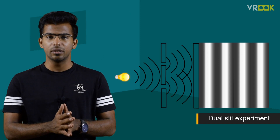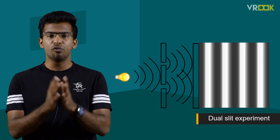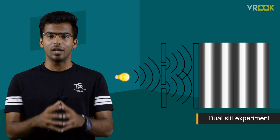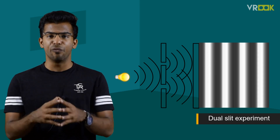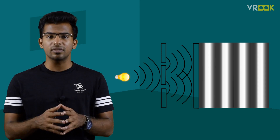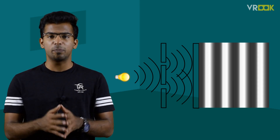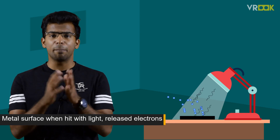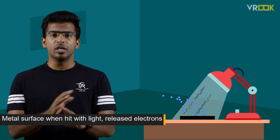After the double slit experiment, the debate was over for a while, and scientists agreed on light being a wave. As always, another experiment came into the picture: a metal surface, when hit with light, released electrons, and this behavior did not match if we assumed light was a wave.